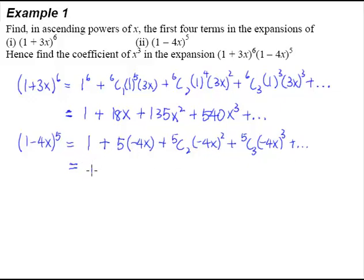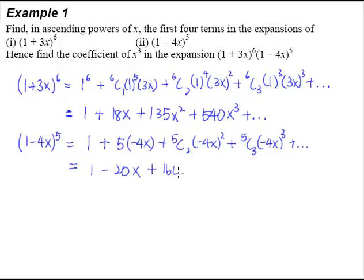We have to simplify with the help of a calculator. 5 multiplied by negative 4 gives us negative 20, so negative 20x. Next, 5C2 from the calculator is 10. Negative 4 squared gives a positive 16. 16 multiplied by 10 gives us 160x².